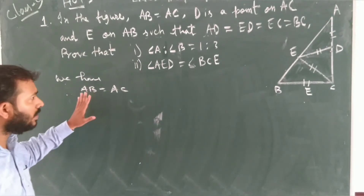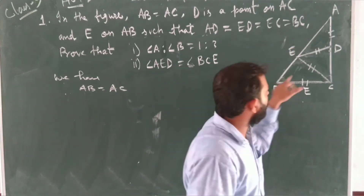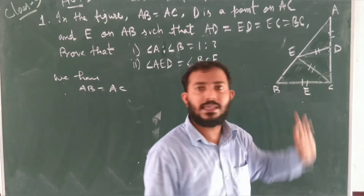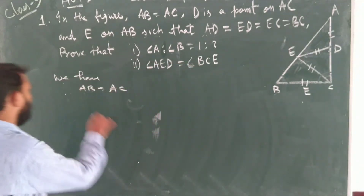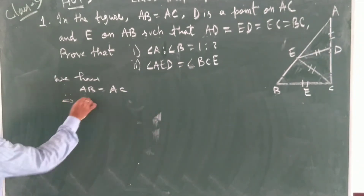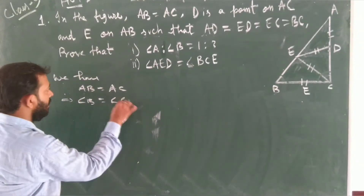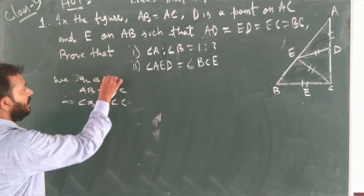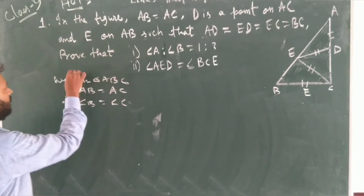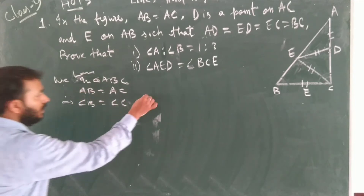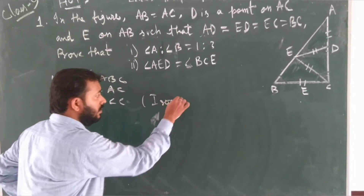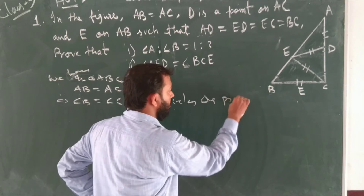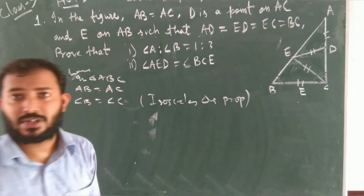Now, since AB equals AC, that means angle B must be equal to angle C. So we write: in triangle ABC, angle B equals angle C. We apply the isosceles triangle property here.